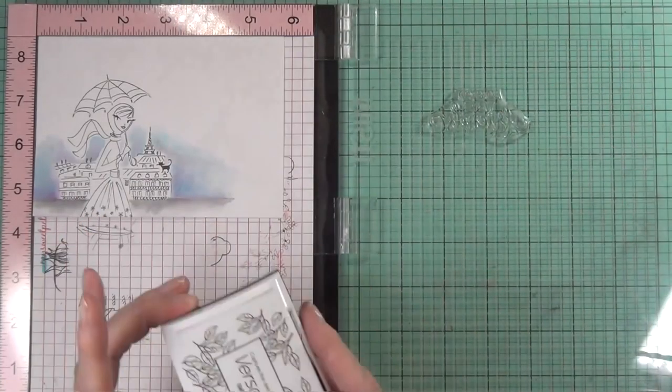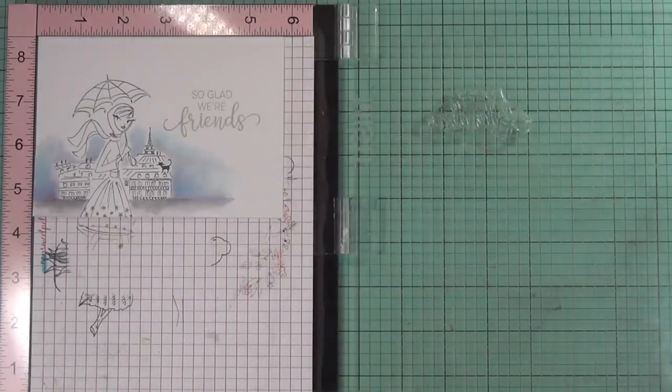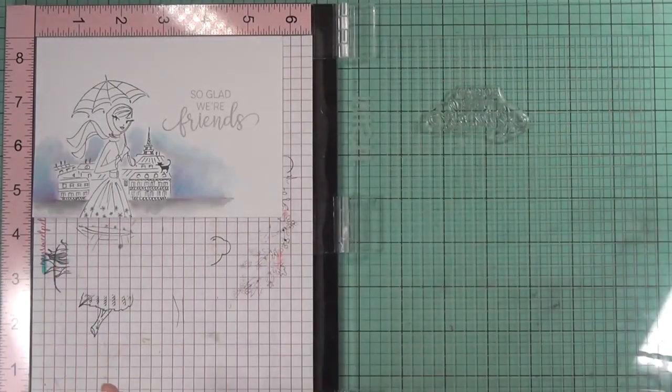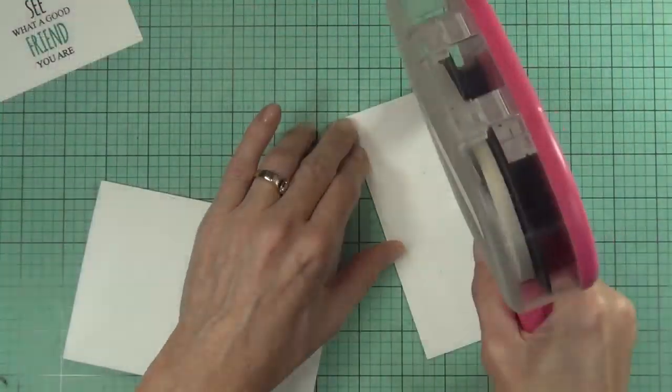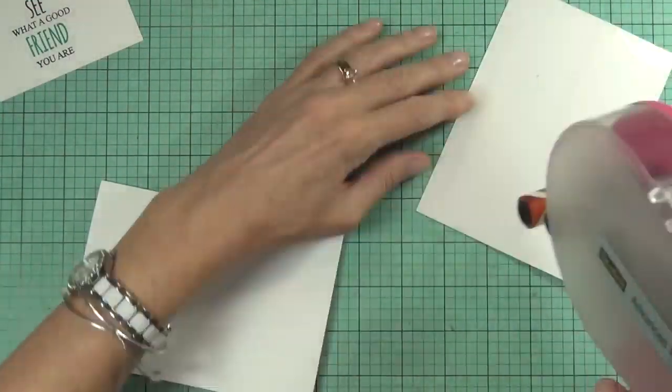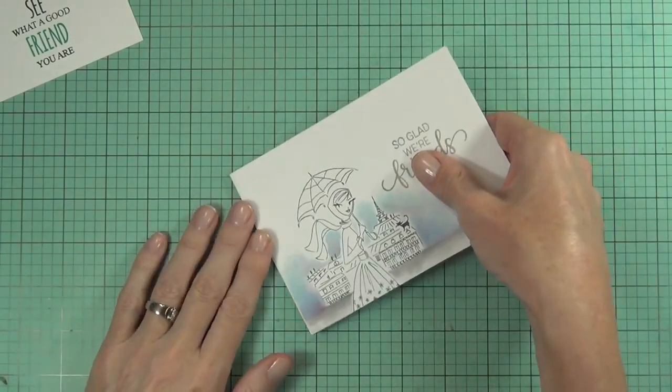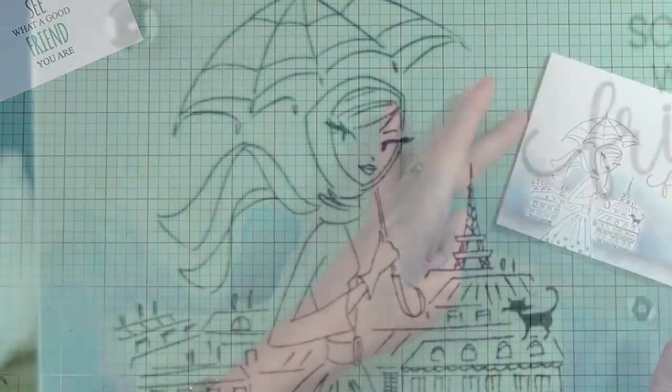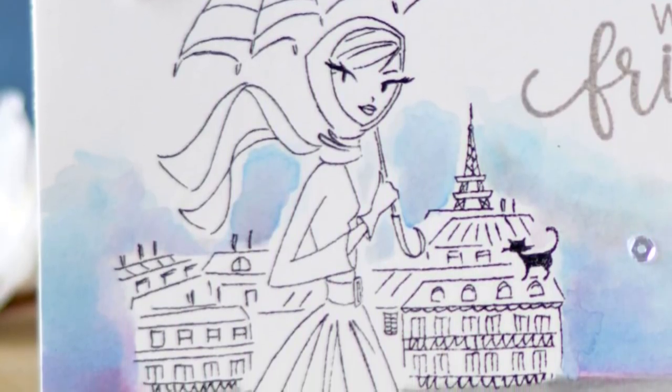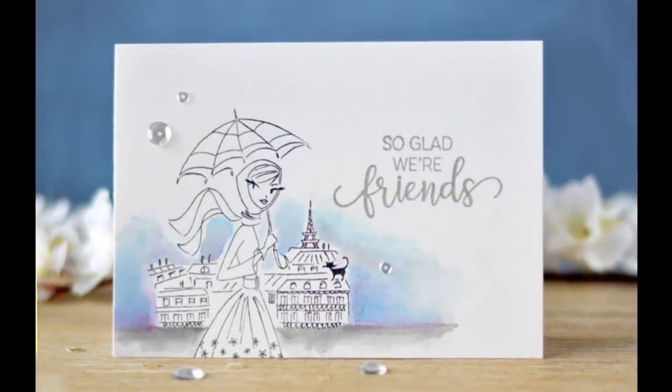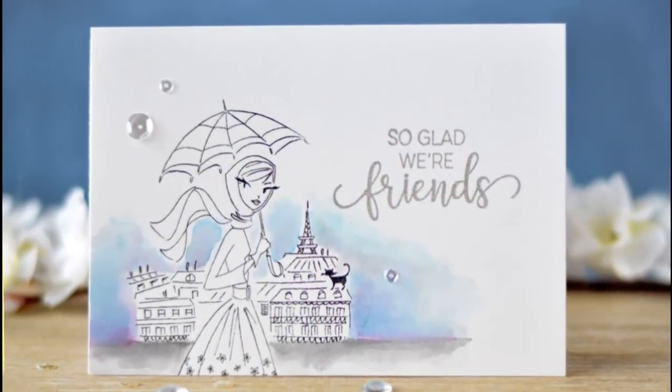Now for the girls, I'm using some sentiments from a really sweet set called Choose Happy. I stamped the gray ink a couple of times just because it is on the Bristol smooth, and used my ATG gun to adhere that together. As an extra detail I just added a couple of clear sequins.